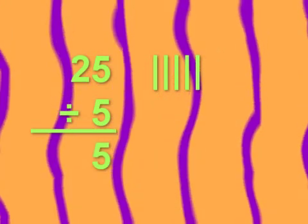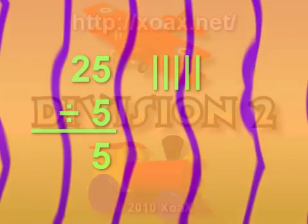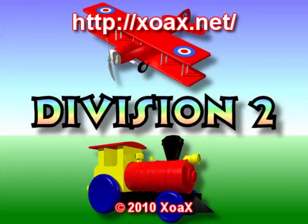25 divided by 5 equals 5. 25 divided by 10 equals 5.